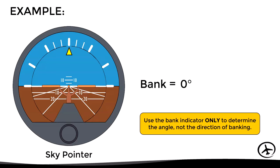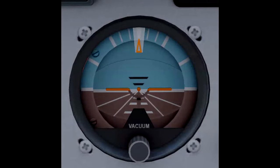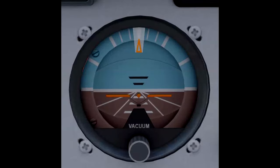Another feature found on some attitude indicators, especially those manufactured in the United States, is an adjustment knob. It allows the pilot to adjust the miniature aircraft relative to the instrument horizon, according to the pilot's point of view and the aircraft's attitude when flying straight and level.